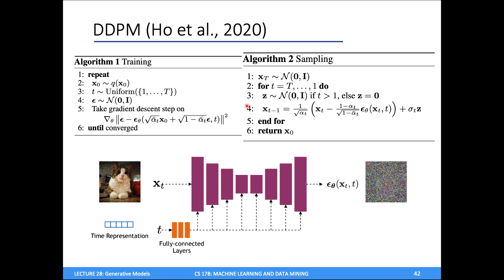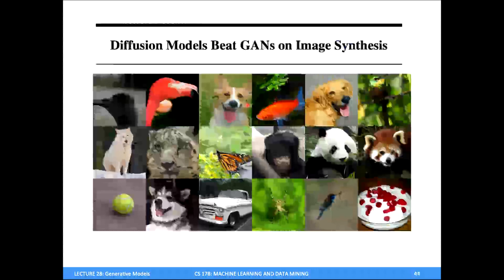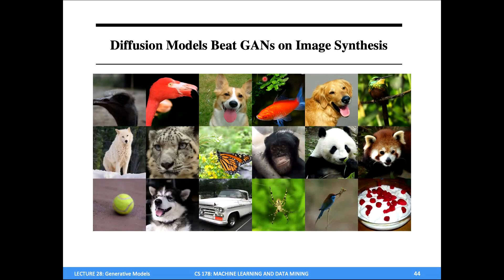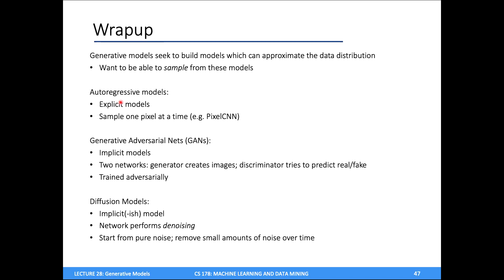Depending on what camp you're in, you might argue about which model is state of the art, but it's diffusion models. GigaGAN is a billion-parameter model which is massive — you do not need a billion parameters for diffusion models to get comparable performance. Let's go ahead and wrap up.